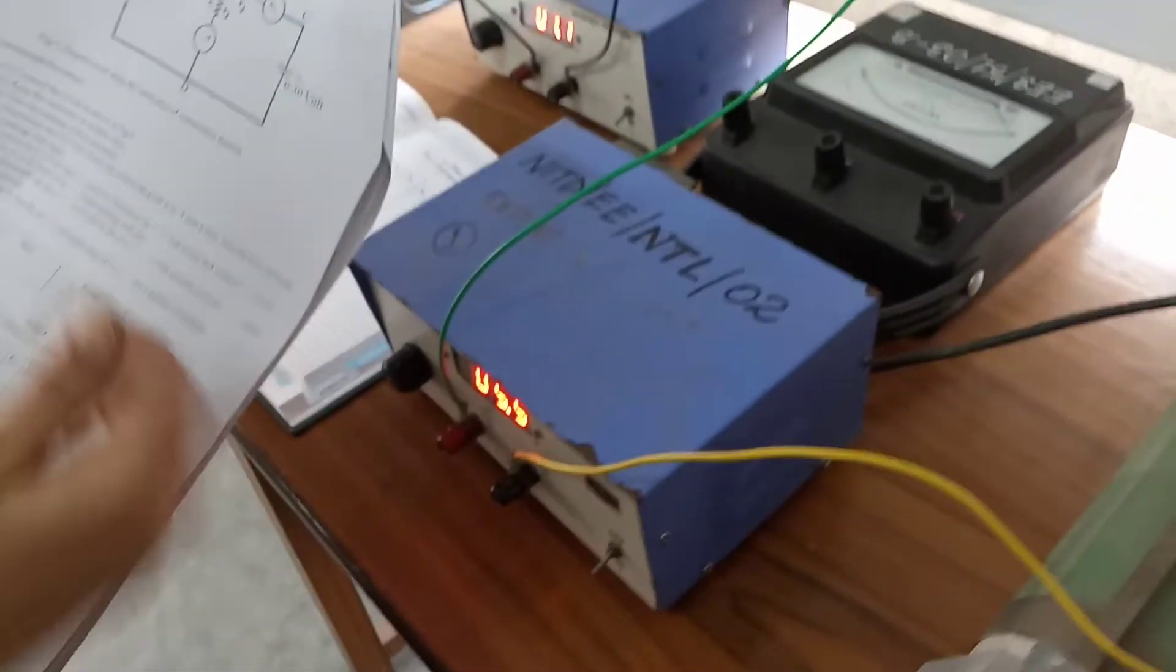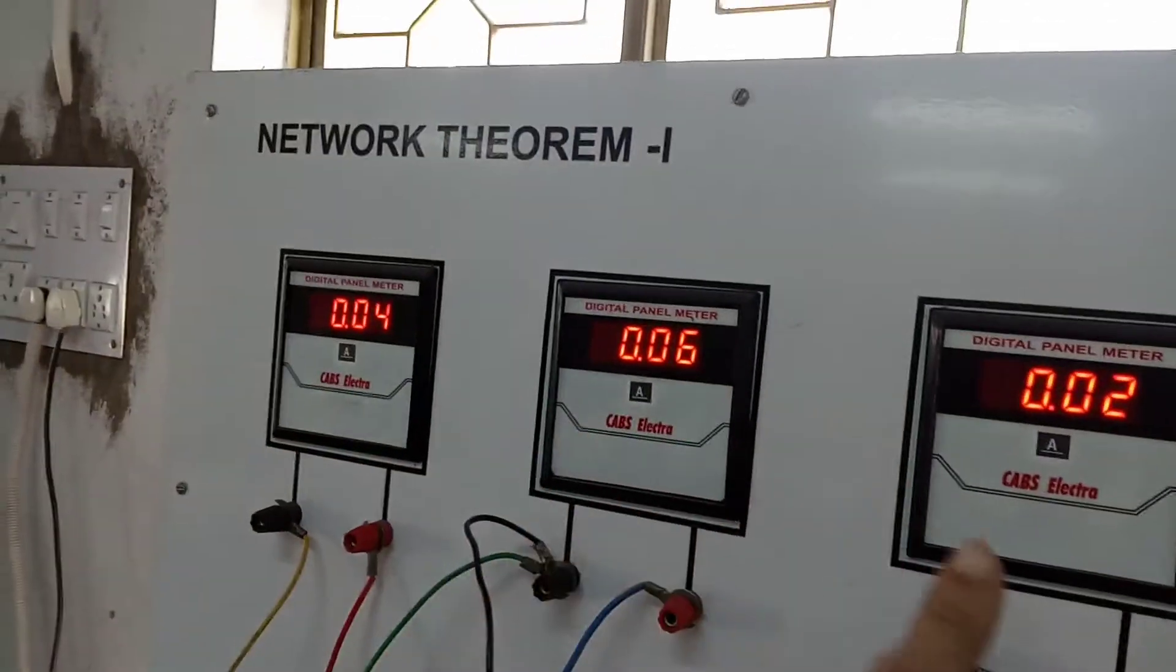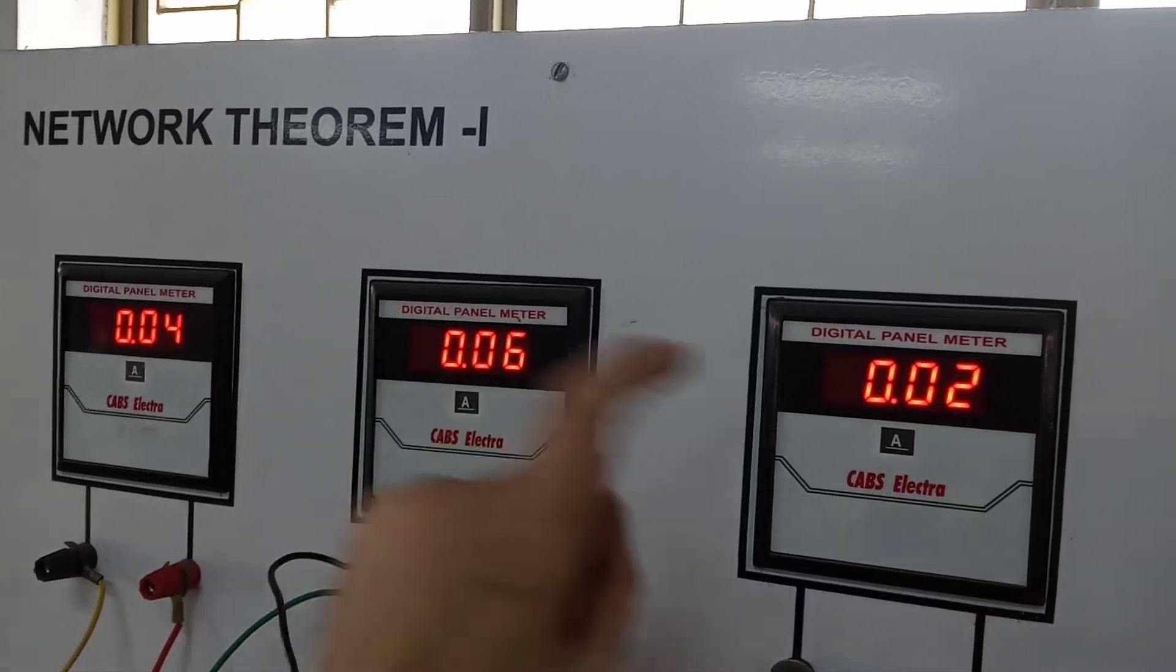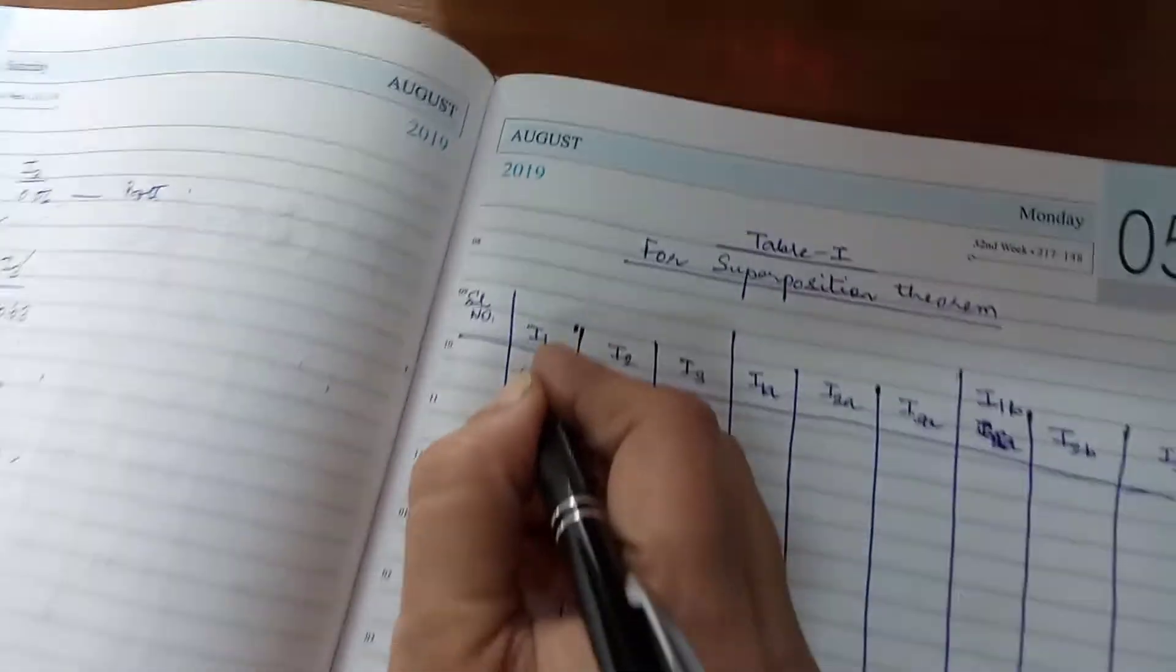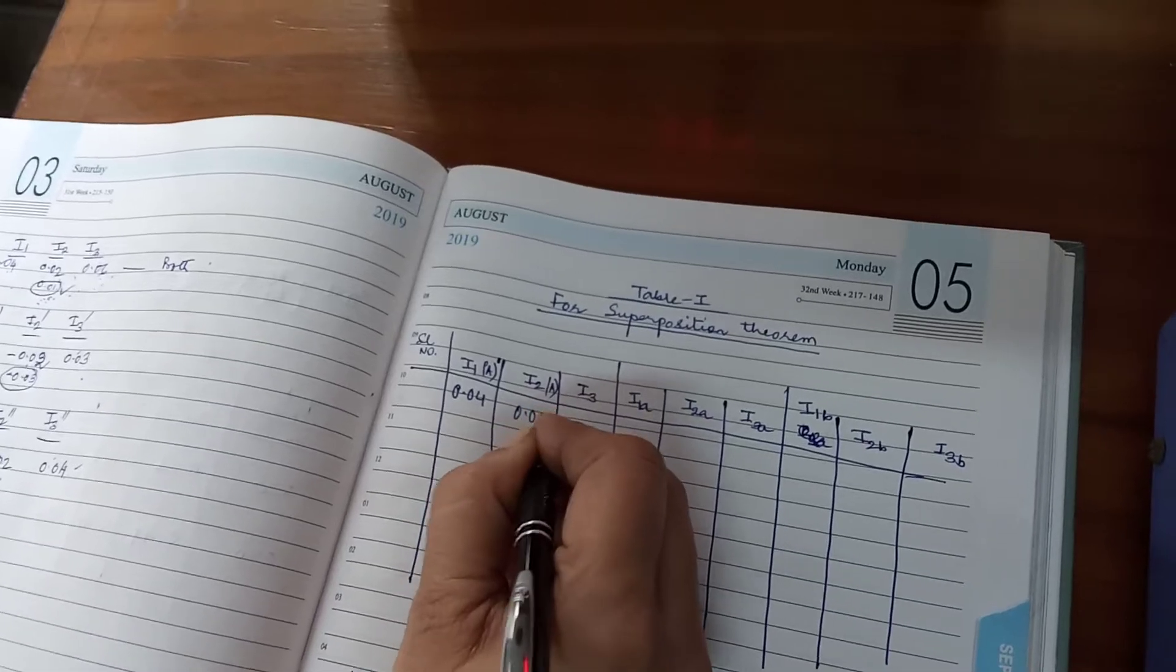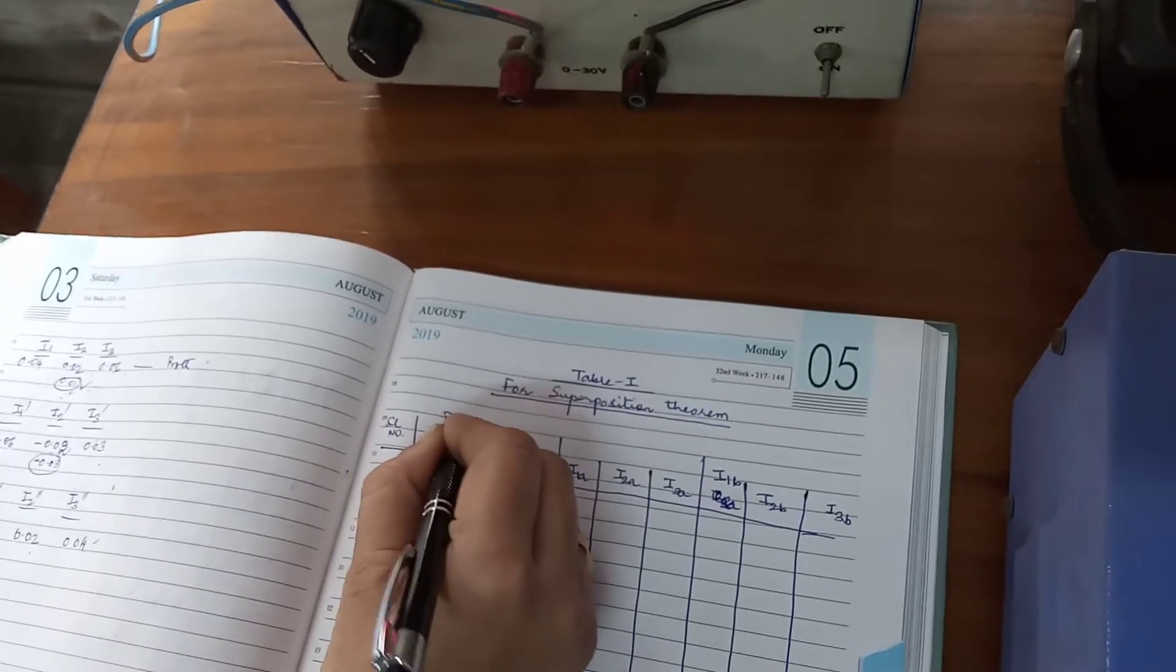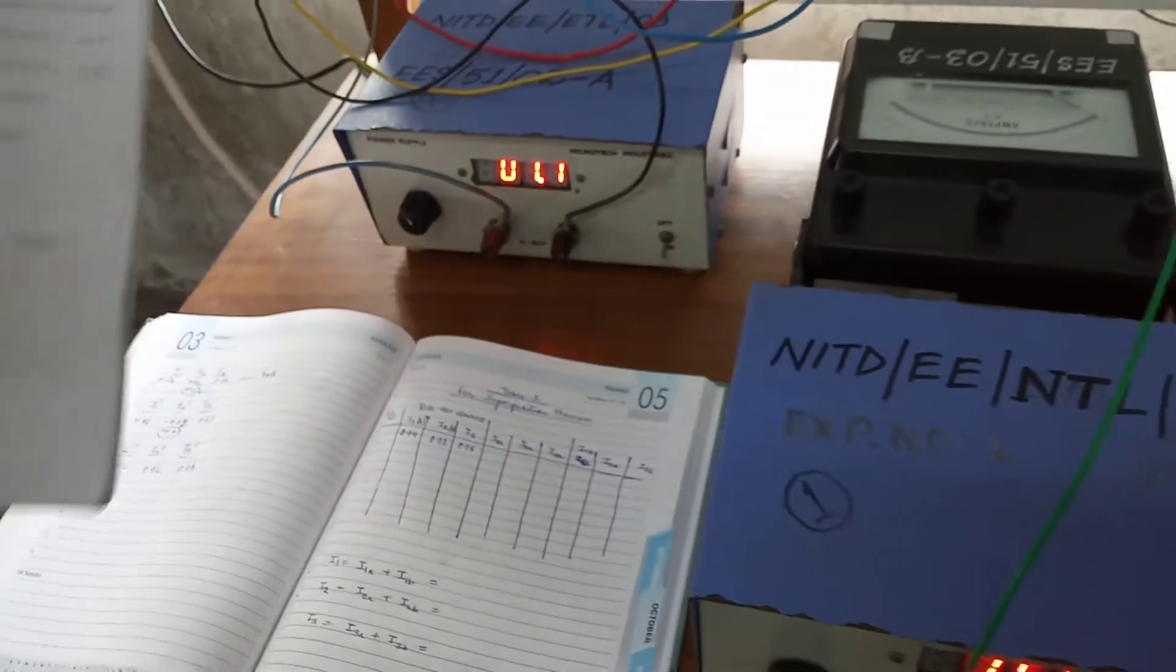Now we are going to demonstrate the procedure. First, when two sources are connected, we will measure all three currents I1, I2, I3. I1 is showing 0.04 ampere, I3 is showing 0.06, and I2 is showing 0.02. So I1 is 0.04, I2 is 0.02, and I3 is 0.06 when both sources are connected.